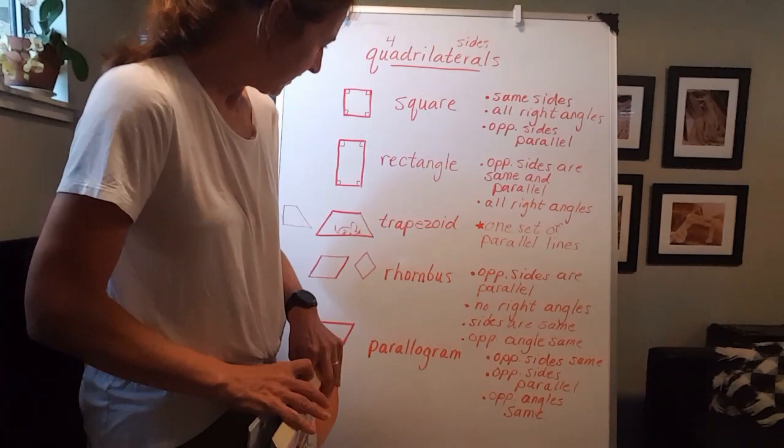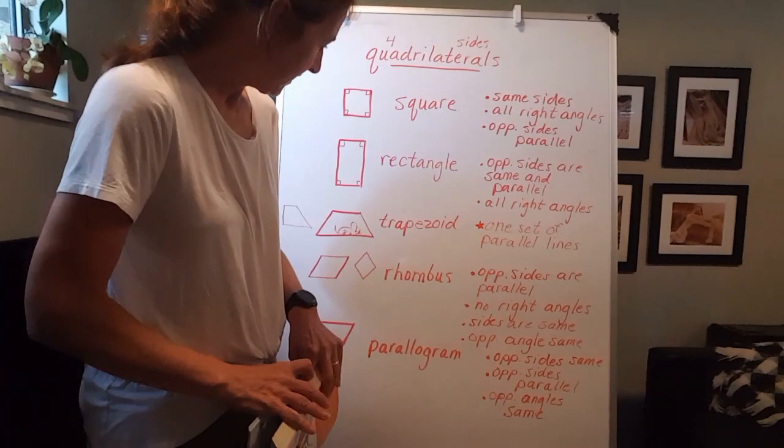Hey third graders, I just realized I had spelled trapezoid wrong on my chart — it's an E in trapezoid, not an A. Make sure when you're writing that word, you spell it right.